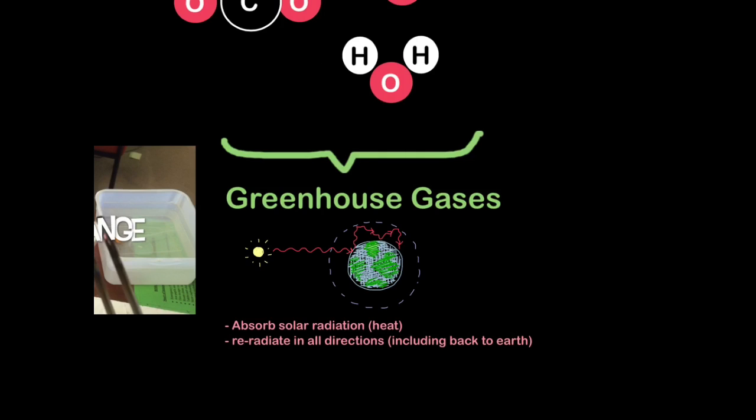So remember, greenhouse gases absorb solar radiation or heat and then re-radiate it, that means emit it, in all directions including back to Earth.